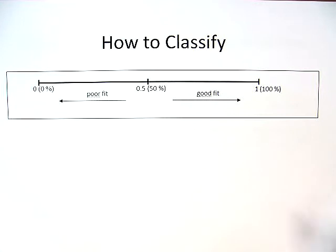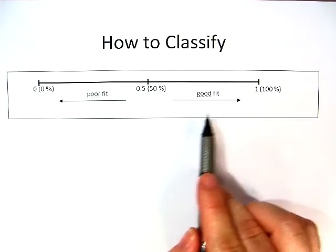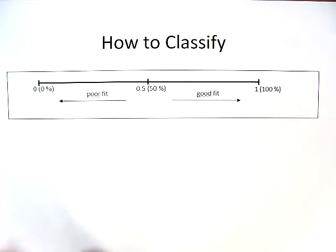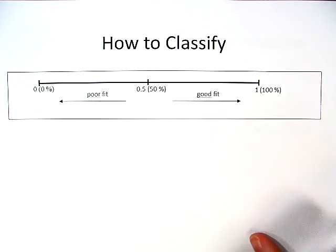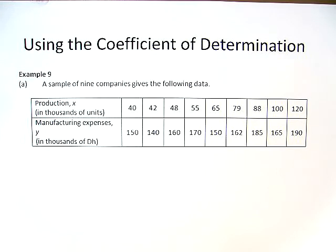This is how we classify it. It's very simple. Anything above 50% is considered a good fit. And anything below 50% is considered a poor fit. Now, that's a little bit about teaching, but let's actually try it out.